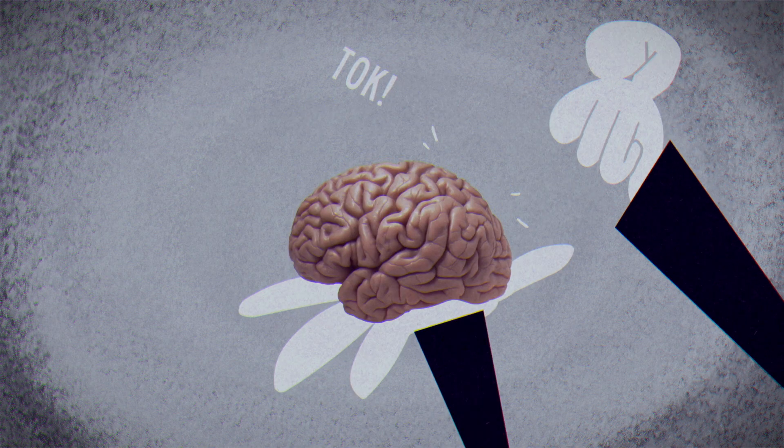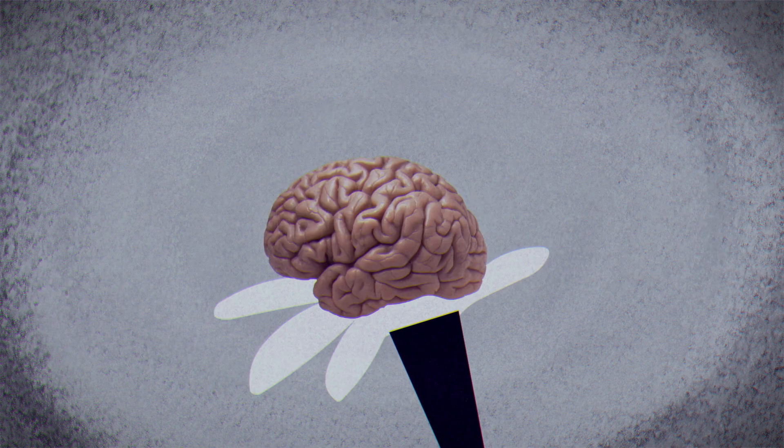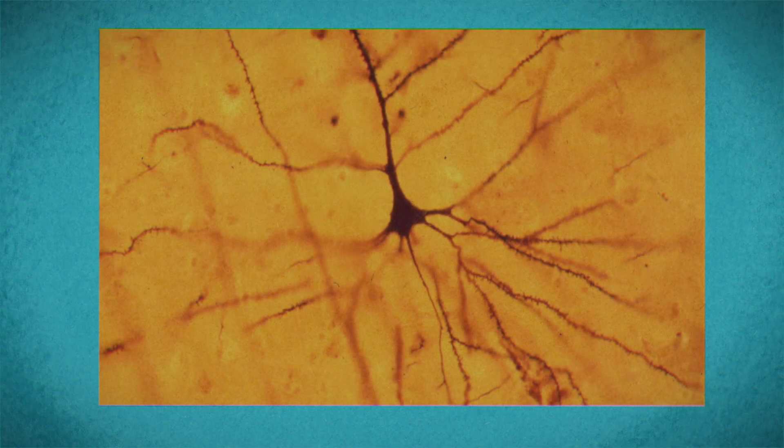First, Golgi hardened the brain tissue with potassium bichromate to prevent cells from deforming during handling. Then, he dosed the tissue in silver nitrate, which visibly accumulated in nerve cells.